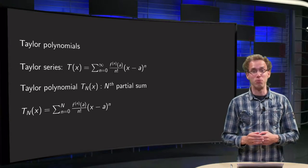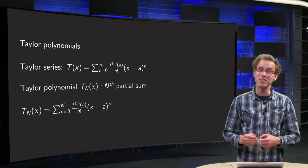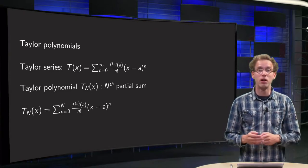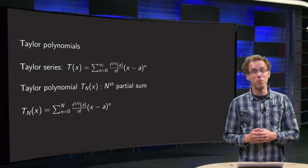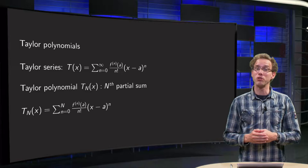Instead of computing the full Taylor series, you compute the nth, second, or third partial sum of the series. This sum will be a polynomial in x, it is called the Taylor polynomial.